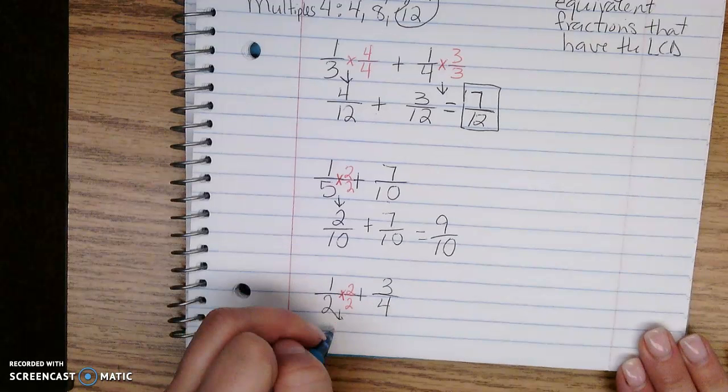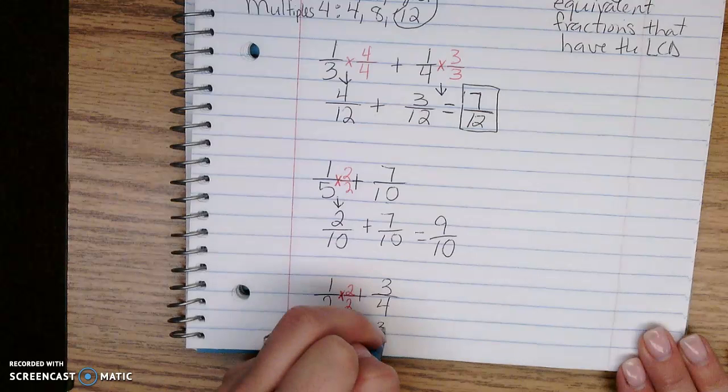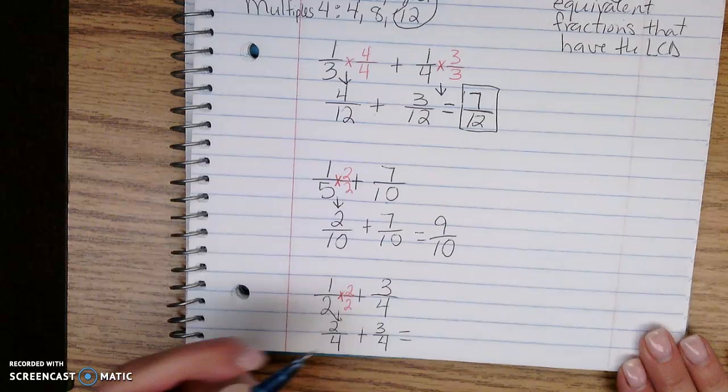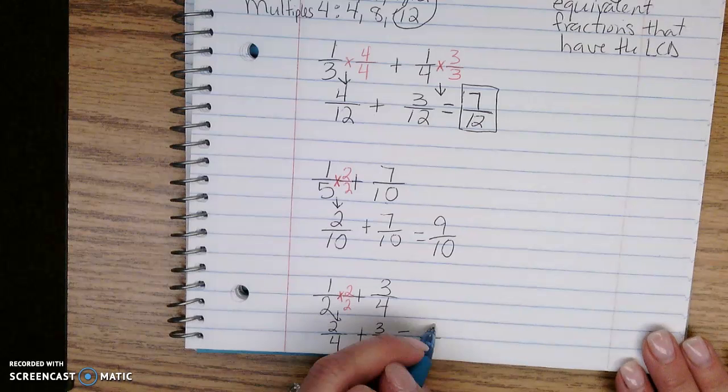2 times 1 is 2, and 2 times 2 is 4, plus 3/4 equals... I slide that denominator over, 4. And 2 plus 3 is 5.